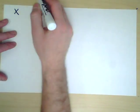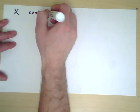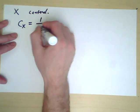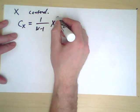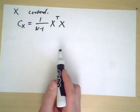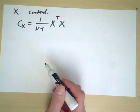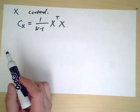Now we have a data set x which is centered. Let's define Cx to be 1 over n minus 1 times x-transpose x. This is essentially x-star x from our discussion of the Hermitian inner product and of the singular value decomposition, but for statistical purposes we're dividing by n minus 1.